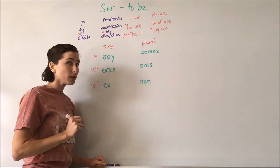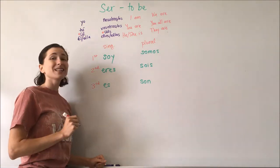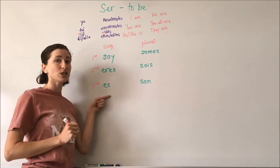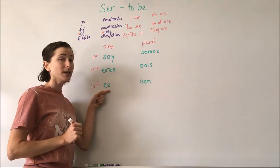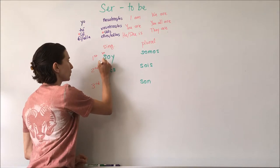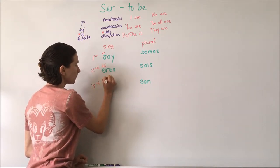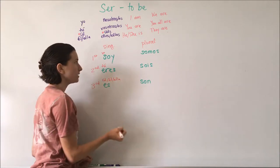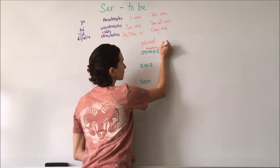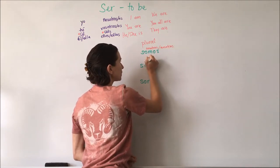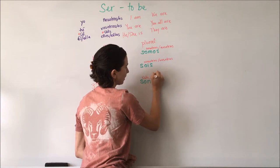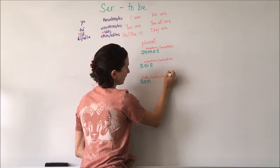When we're using the formal language — so usted and ustedes — it's second person because we're talking directly to that person. However, we're going to use the third person conjugations for them. So: yo soy, tú eres, usted/él/ella es, nosotros or nosotras somos, vosotros or vosotras sois, ustedes/ellos/ellas son.